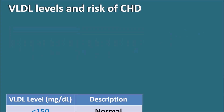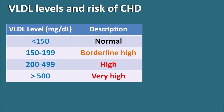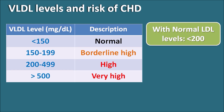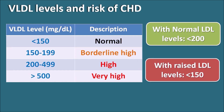VLDL levels and risk of CHD: VLDL is rich in triglycerides, which account for 20% of total cholesterol. VLDL levels less than 150 mg/dL are normal, 150 to 199 are borderline high, 200 to 499 are high, and greater than 500 are very high. When a patient has elevated VLDL with normal LDL, maintaining VLDL less than 200 is sufficient. However, if both LDL and VLDL are raised, the risk for CHD is greater and VLDL should be maintained less than 150. Optimal VLDL targets depend on whether LDL cholesterol is normal or raised.